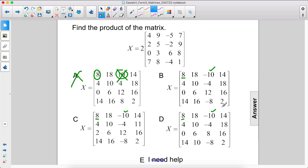2 times 7 is 14, which is everywhere. 2 times 2 is 4. 2 times 5 is 10.